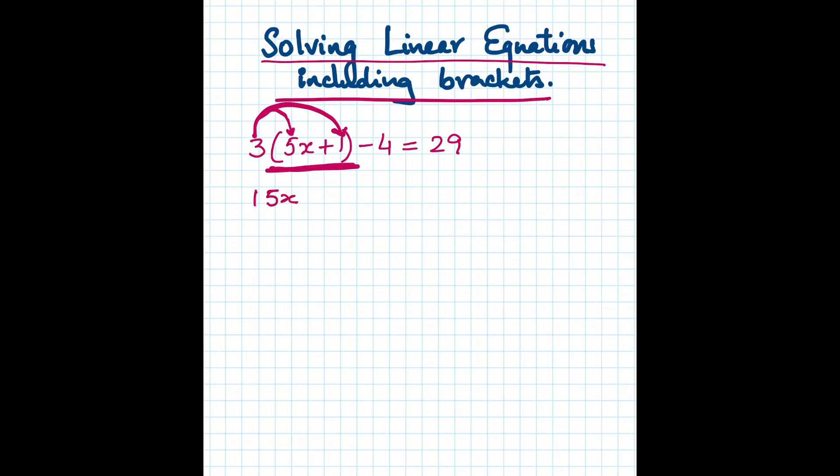And 3 times 1, so it's plus in between, 3 times 1 is 3, minus 4 equals 29. So here we can see that on the left hand side we can solve the numbers first. We have 15x and 3 minus 4 gives us minus 1 equals 29. Now we will add 1 on both sides.